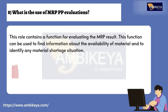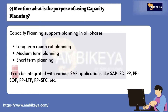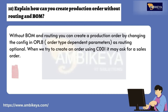Question number eight: what is the use of MRP PP evaluations? This role contains a function for evaluating the MRP result. This function can be used to find information about the availability of material and to identify any material shortage situation. Question number nine: mention what is the purpose of using capacity planning. Capacity planning supports planning in all phases: long-term rough cut planning, medium-term planning, and short-term planning. It can be integrated with various SAP applications like SAP SD, PP, PP-SOP, PP-LTP, PP-SFC, etc.